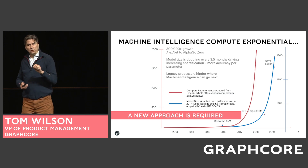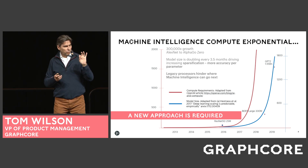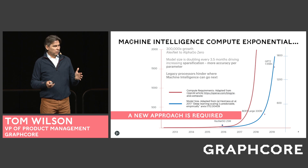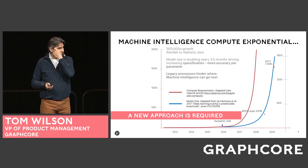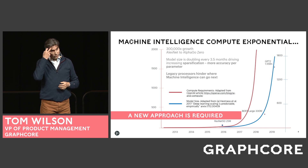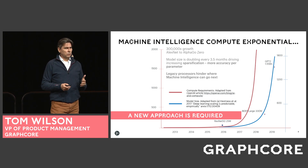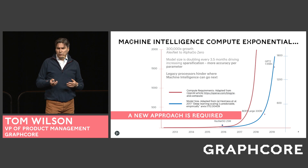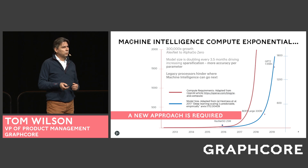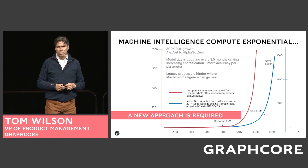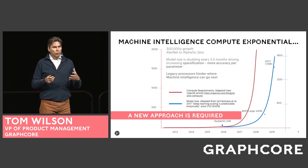Sparsification — getting sparser weights to get more efficiency — the challenge there is it doesn't necessarily map well to legacy SIMD or SIMT architectures. Graphcore has spoken to a number of researchers and machine learning experts, and the message has come through loud and clear that legacy processors are, to a large extent, actually hindering where we can go next. It's not uncommon to talk to researchers who want to explore sparse models but can't efficiently do that.